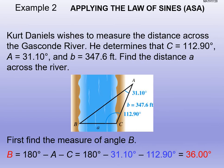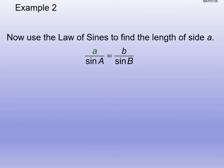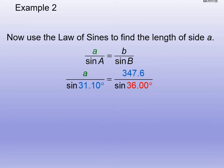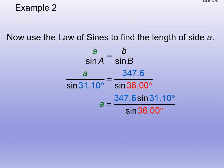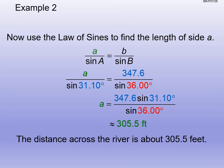Now that we know big B is 36 degrees, we can use little b and either A or C to find the missing piece. We choose a/sin(A) = b/sin(B). Substituting in: b/sin(105°)... wait, we use b/sin(B) = c/sin(C) or a/sin(A) = b/sin(B). Little b is 347.6, big A is 31.1°, big B is 36°, so a = 347.6 × sin(31.1°) ÷ sin(36°). Make sure your numerator is in parentheses. Approximately, the distance across the river is about 305.5 feet.